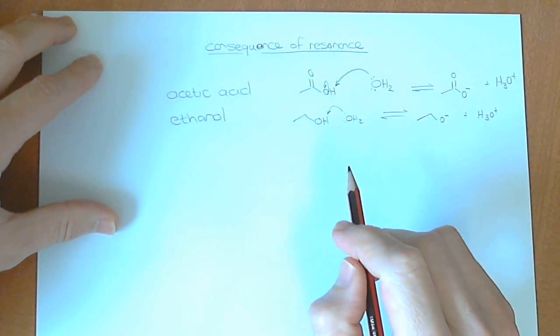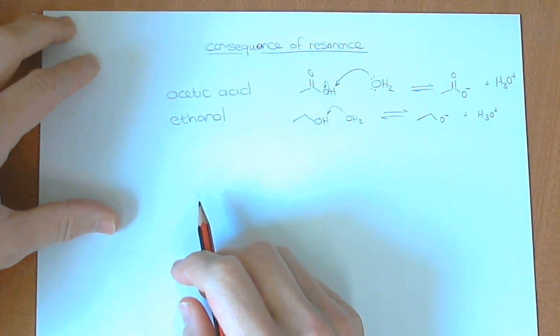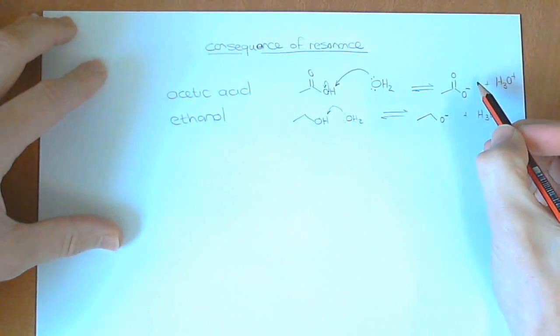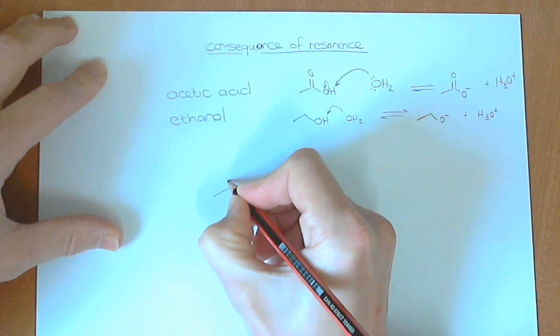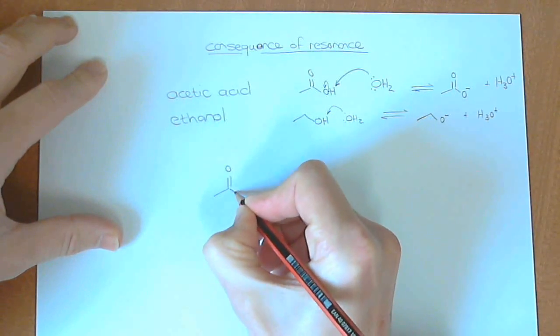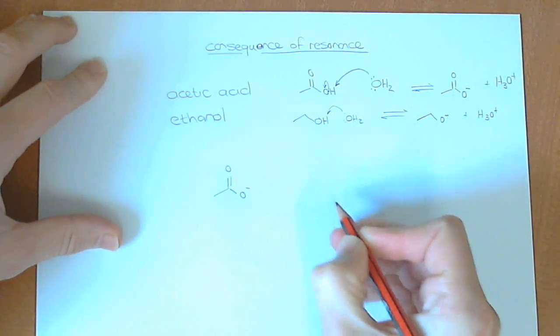The question is, why? Well, the answer, as I've already given to you, has to do with resonance. You see, this acetate anion that I've drawn over there can exist in two resonance forms. So the one is that.